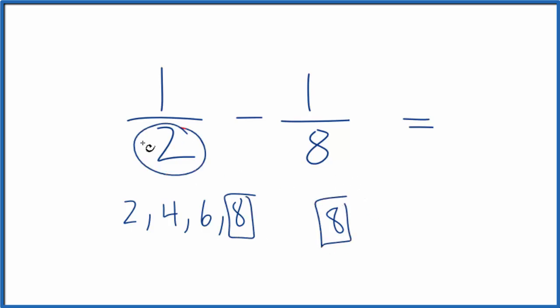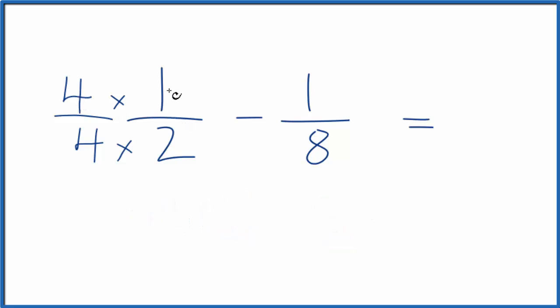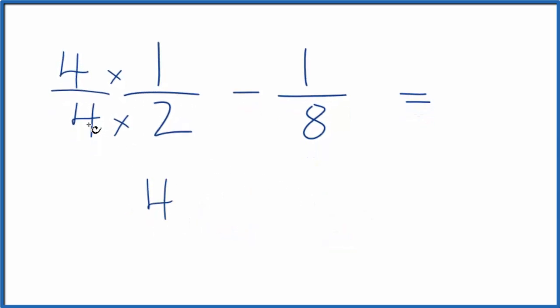So if I could get this to be an eight, we'd be almost done. The way I can get eight here is multiply by four. Four times two is eight. But I also have to multiply the top by four, so I don't change the value of the fraction. Four divided by four, that's just one, so it doesn't really change anything. But now, four times one, that's four, and four times two is eight.